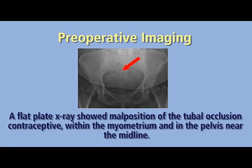She presented to our office in referral from her gynecologist. On physical examination, she had diffuse abdominal tenderness to palpation greater on the right than the left. The decision was made to move forward with a laparoscopic removal of the tubal occlusion contraceptive and bilateral salpingectomy the following day.